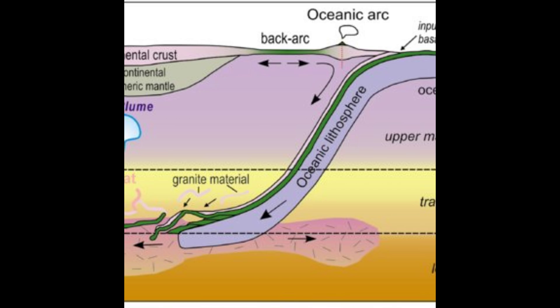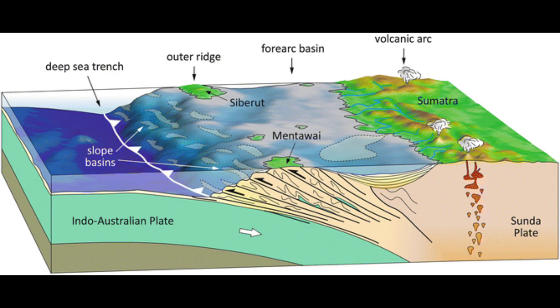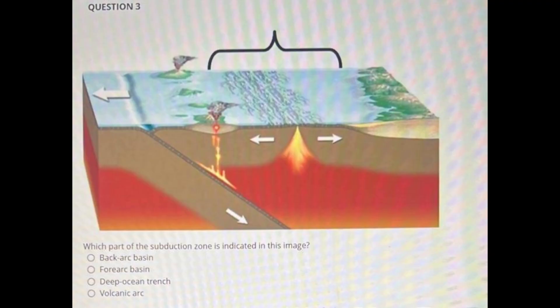Parts of accretionary wedges are characterized by numerous thin units of rock layers that are repeated by numerous faults, known as thrust faults, along which the same unit may be stacked upon itself many times. Other parts or other wedges are characterized by a relatively large section of rocks with relatively few faults, and still other sections are dominated by folded units and packages of rocks.